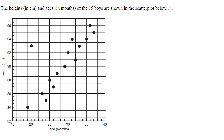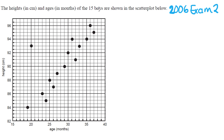This question appeared on the 2006 exam 2, the extended response exam. The question said: the heights in centimetres and the ages in months of the 15 boys, carrying on from a previous question, are shown in the scatterplot below. The scatterplot looks like it's got a sort of positive trend to it.